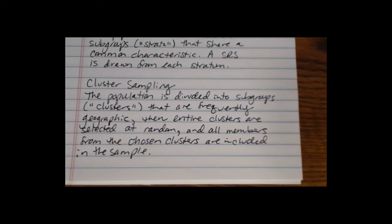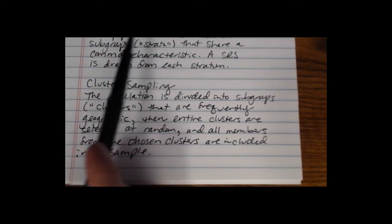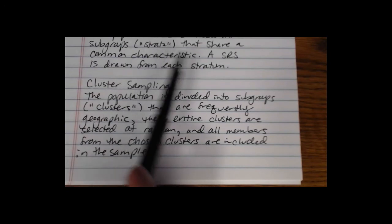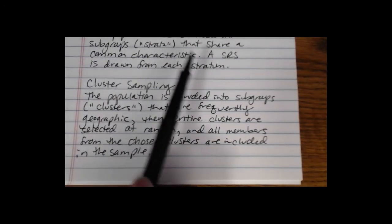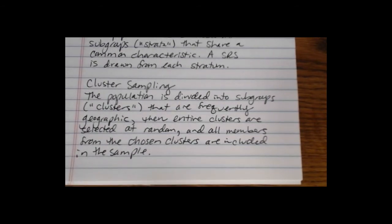So again, different kind of sampling here. Notice the key difference is that in stratified sampling, we divide into subgroups and then we take a simple random sample from each one. So all of those subgroups are ultimately represented in the final sample. With cluster sampling, that doesn't happen.